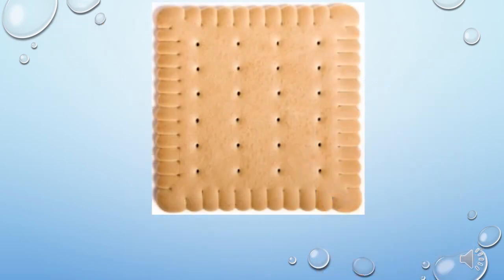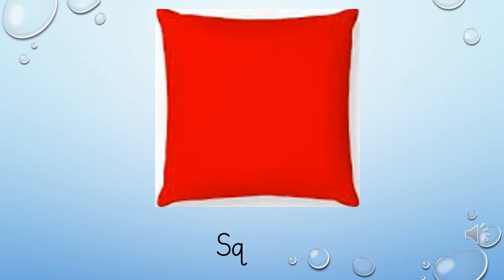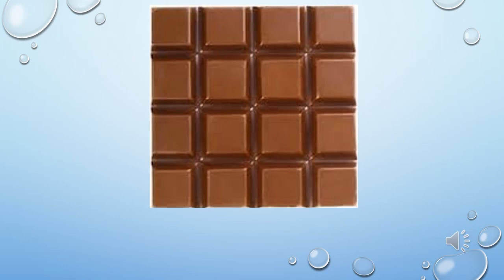What is the shape of this biscuit? Yes, it's a square. And how to write square? S-Q-U-A-R-E, Square. The shape of this cushion is also a square. S-Q-U-A-R-E, Square. This chocolate looks yummy. What is the shape of this chocolate? Right, it's a square. S-Q-U-A-R-E, Square.